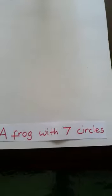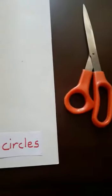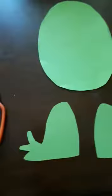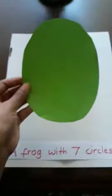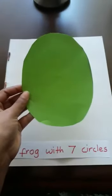Good morning everyone. Today's activity is a frog with seven circles. You will need a blank piece of paper, scissors, a marker, and construction paper. First, take your construction paper, draw and cut out an oval shape like this.